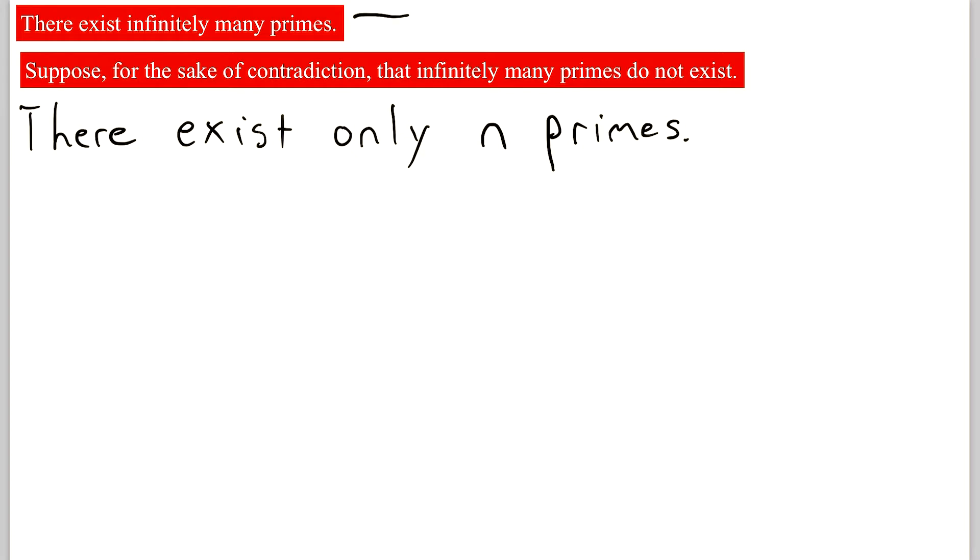So we assumed that our proposition was false, which means that this statement is true, which means that this statement has to be true for some positive integer n.